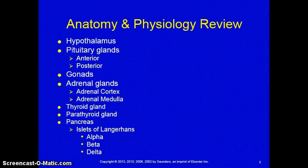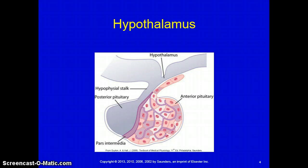Moving into the anatomy and physiology review, we'll discuss specific glands. The hypothalamus is a small area of nerve and glandular tissue located beneath the thalamus in the brain. It shares a small, closed circulatory system with the anterior pituitary gland known as the hypothalamic-hypophyseal portal system, which allows hormones produced in the hypothalamus to travel directly to the anterior pituitary so that only very small amounts are wasted in systemic circulation. The endocrine function of the hypothalamus is to produce regulatory hormones that either stimulate or inhibit the release of anterior pituitary hormones.